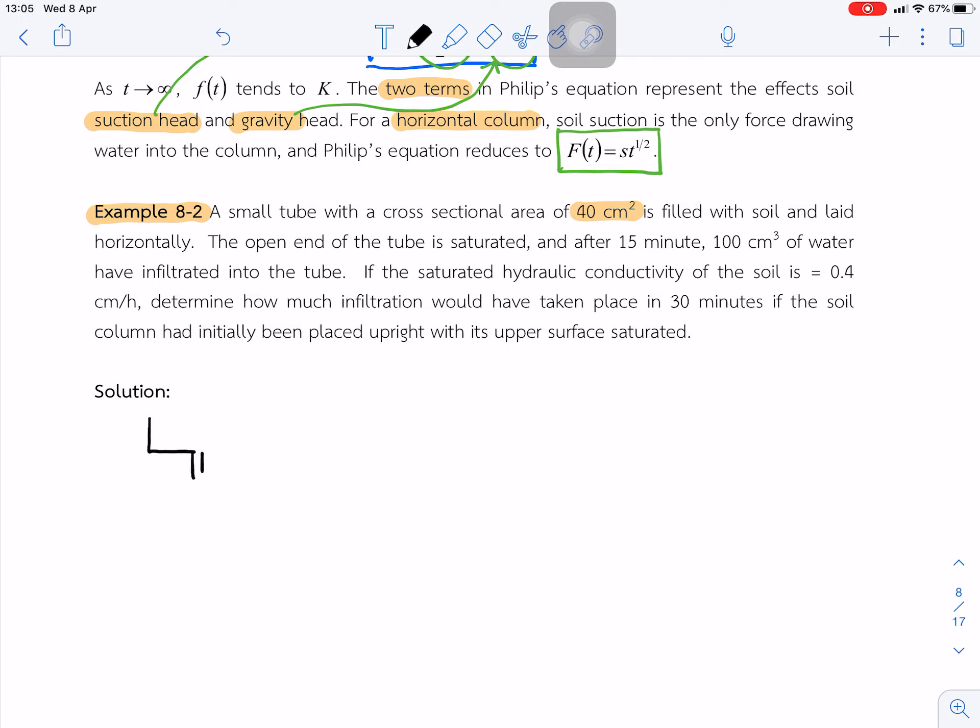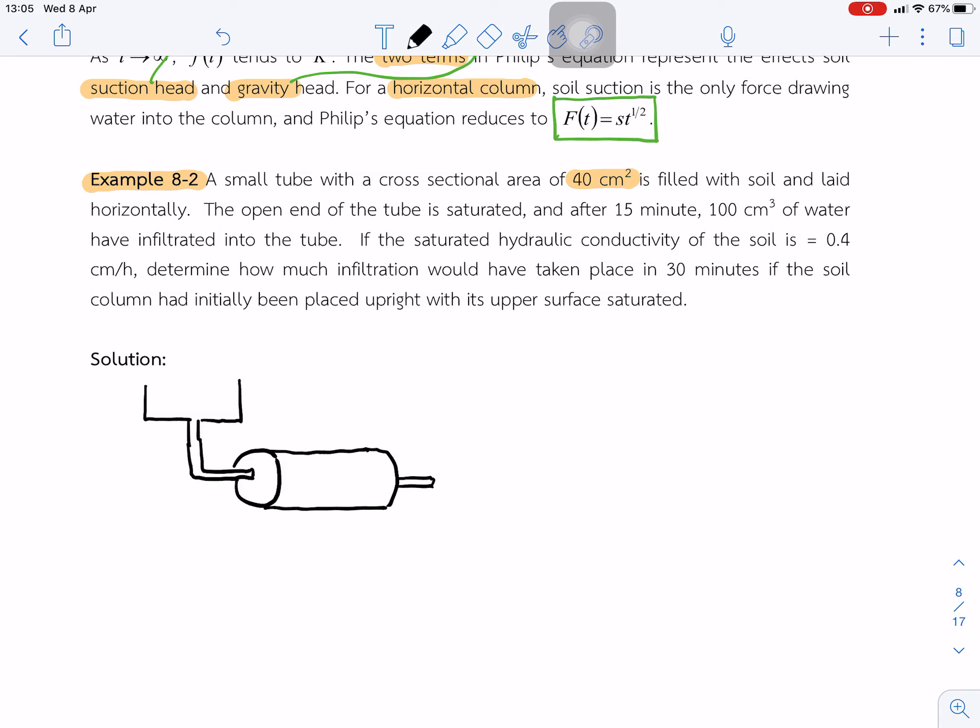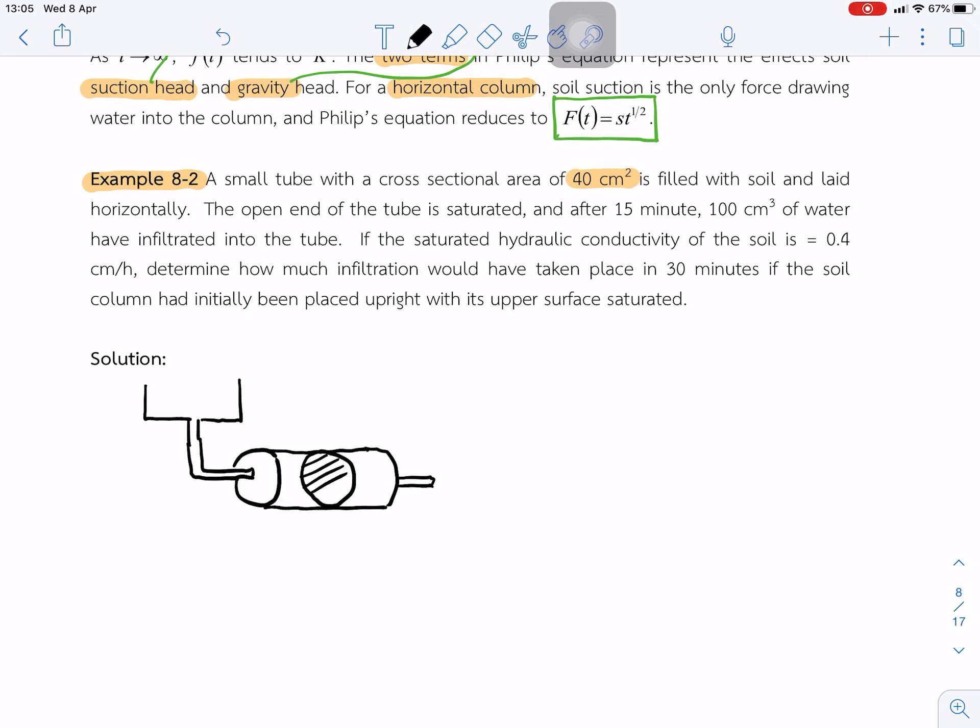A small tube with a cross-sectional area of 40 cm² is filled with soil and laid horizontally. This is a tube, the area is 40 cm². Inside the tube is the soil.